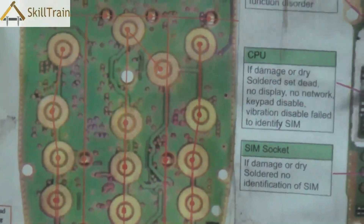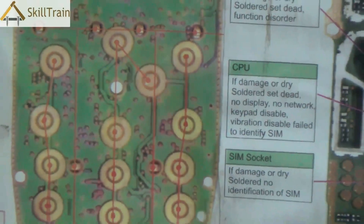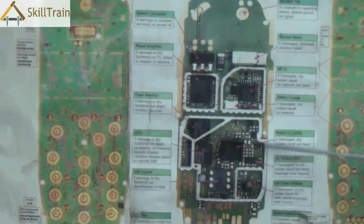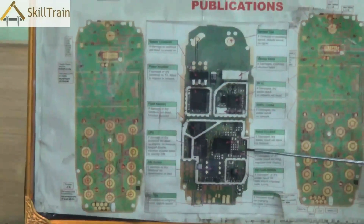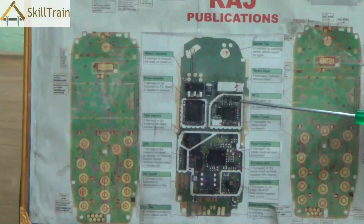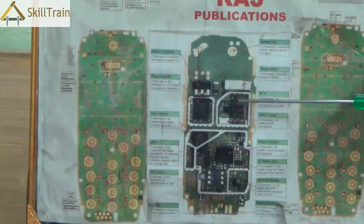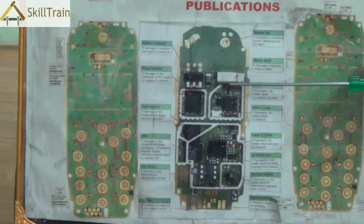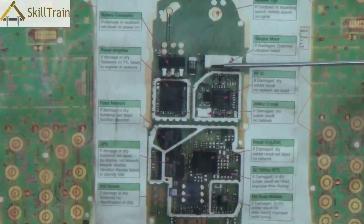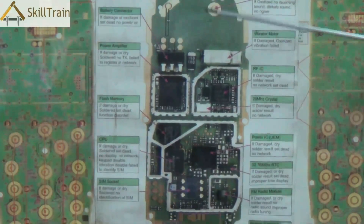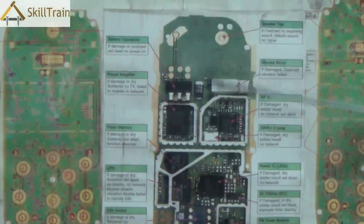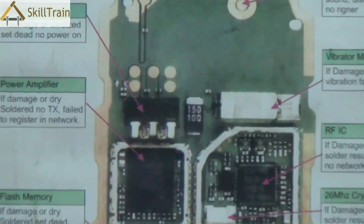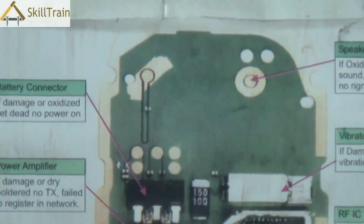Let's now move on and try to understand one more PCB of a different mobile phone. Each mobile phone will have very different components placed in it and will have a different circuit board pattern. It's important to understand that the differences are very clearly evident, and you need to understand how the components are placed to ensure that you are able to repair these mobile phones very well.